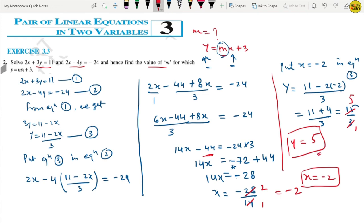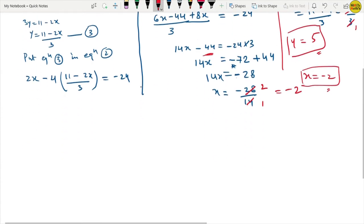Here my values are x and y. X is minus 2, Y is 5. Now the question asked me to find out M. Who will find out M? In which equation? Y equals to Mx plus 3. So how much value is x? Minus 2. And how much value is y? 5.